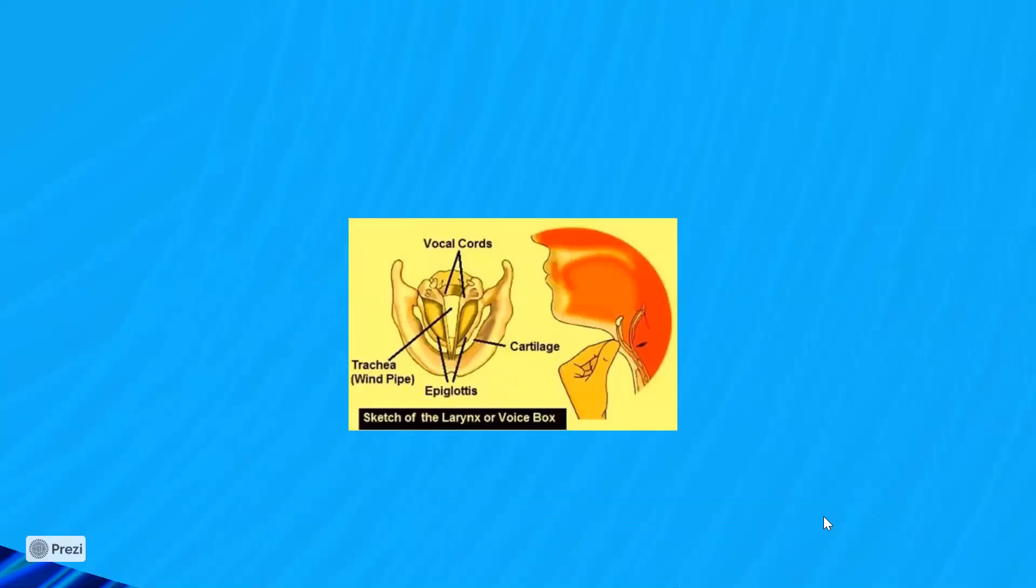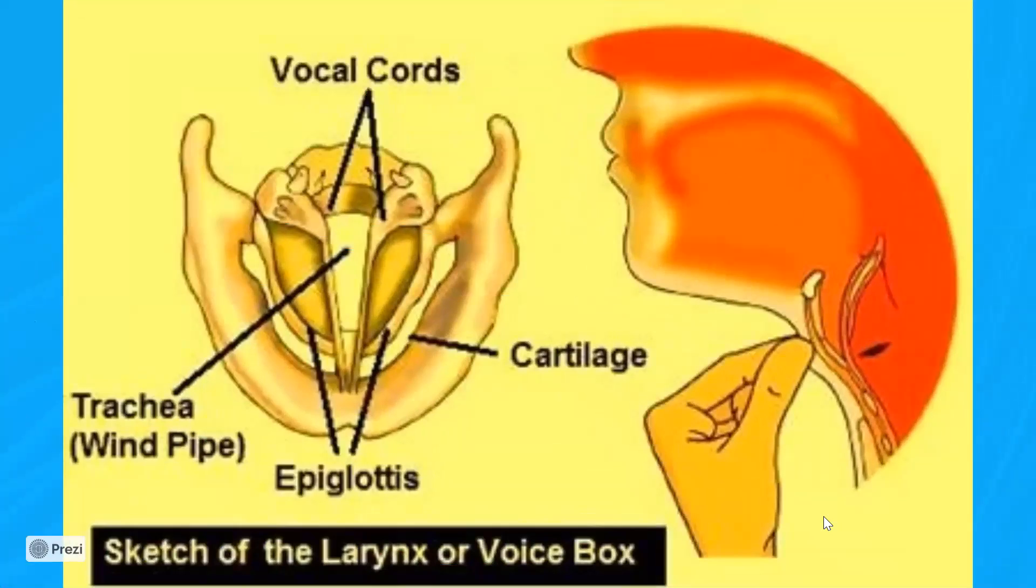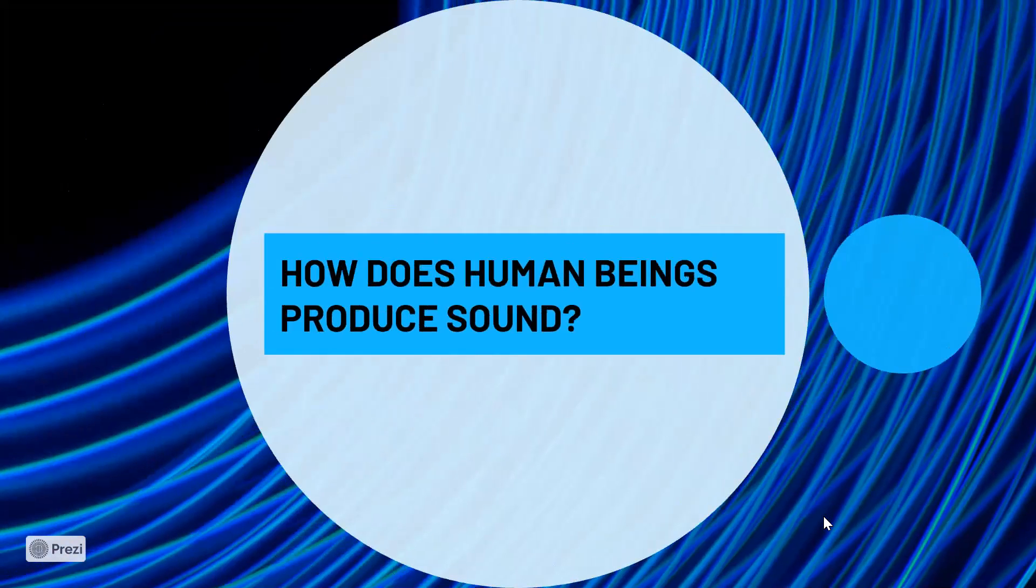Let me show you how the voice box of a human being looks like. You can see here there are two vocal cords and there is a small opening. And when air is passing through the small opening, the stretched membranes will vibrate and this is how human beings are producing sound.